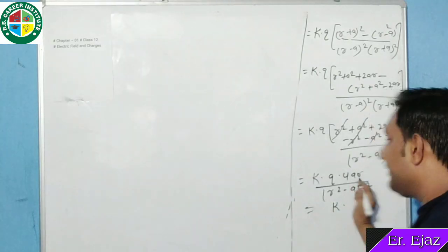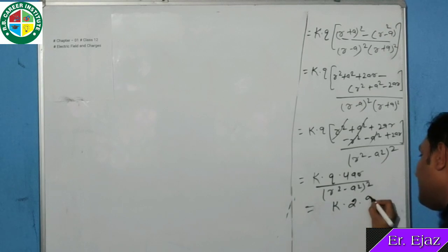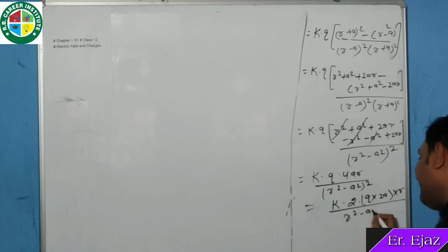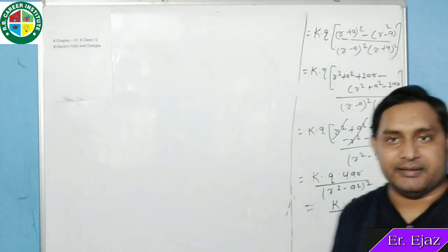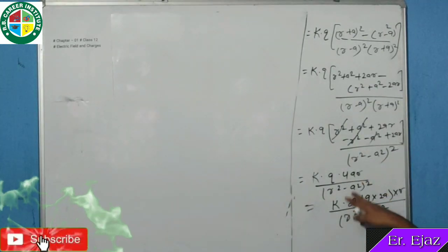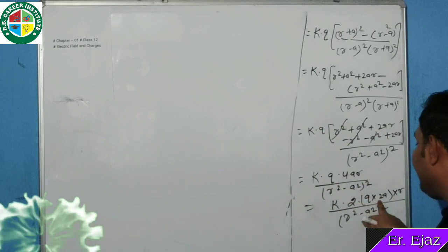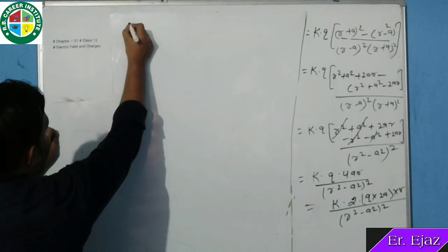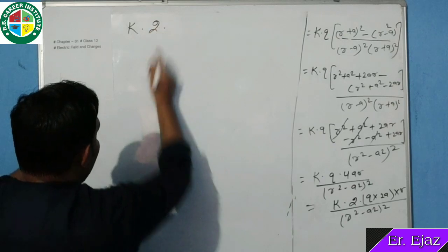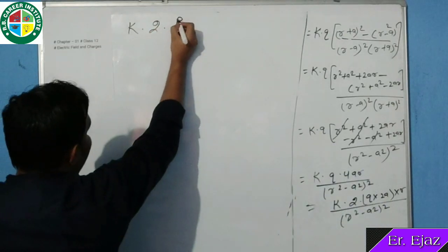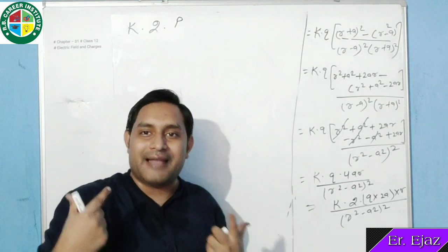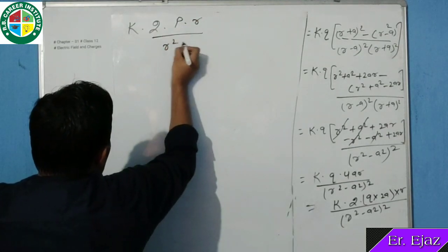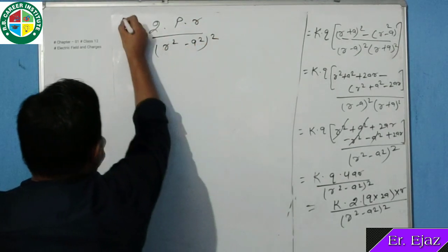4AR को 2 into 2A लिखा, Q into 2A को dipole moment P के साथ substitute किया। Electric dipole के लिए distance of separation बहुत कम होती है, यानी R is very very greater than A, so R²−A² ≈ R²। तो E = K × 2PR upon (R²)² = K × 2PR upon R⁴।